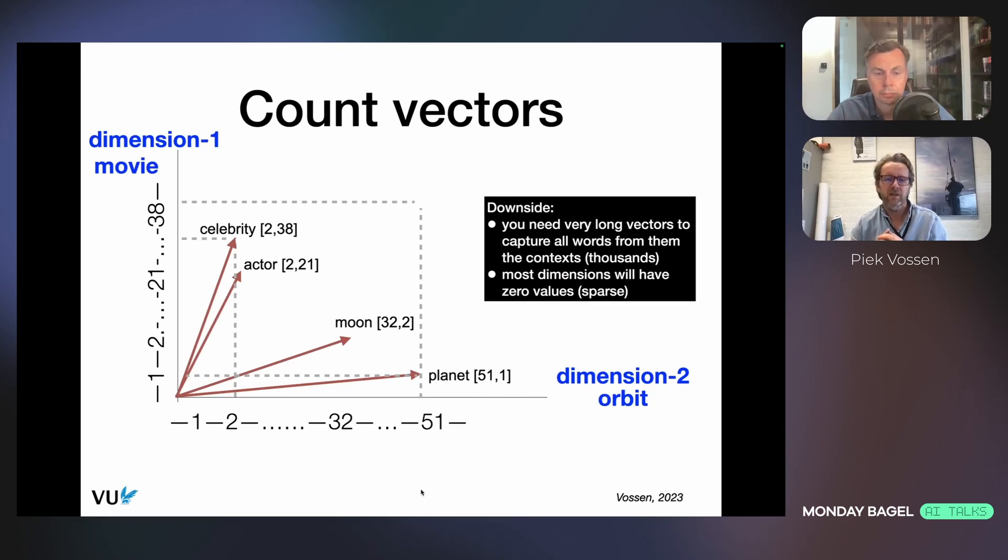If you would simplify that, then you can put that in an n-dimensional space. For us, that's very difficult to visualize. So let's reduce it to a two-dimensional space. We characterize words only on the basis of how often they co-occur with movie and orbit. You just simply count, and you would position celebrity over here in this semantic space, actor close by, and moon and planet far away. In order to do this properly with what we call a count vector, you need to be able to represent a lot of different words that can occur in Wikipedia as context words. So the vector will be very long, and for each word, many of them will have a zero value.